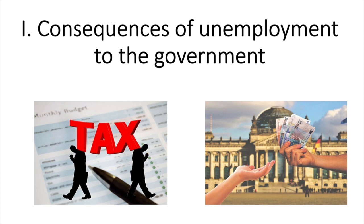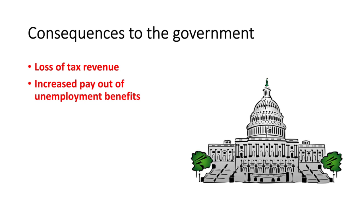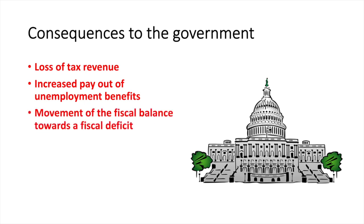First we have to consider the impact on government. A decrease in the number of people working will lead to a decrease in the amount of income that is taxed. With aggregate demand falling, firms will face lower demand and potentially earn less profits, which will reduce corporation tax collected as well. There will be a variety of other tax revenues that are reduced if the overall level of spending falls in the economy. As unemployment rises, the government will naturally have to increase its payout of unemployment benefits, increasing government spending. The overall impact may be a movement of the fiscal balance towards a deficit, simply down to an increase in spending coupled with a decrease in tax revenue collected.